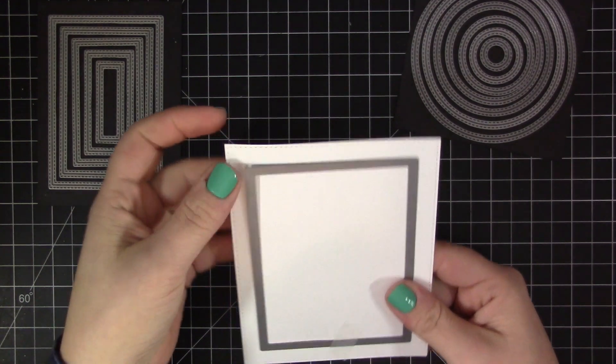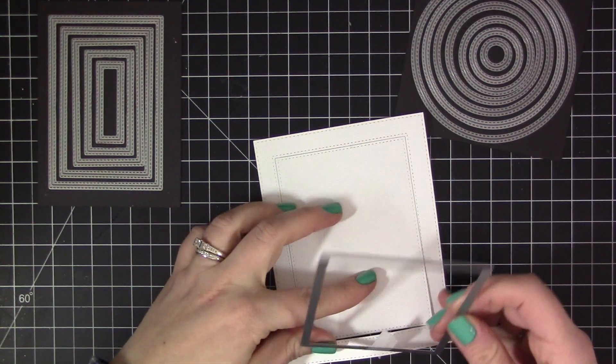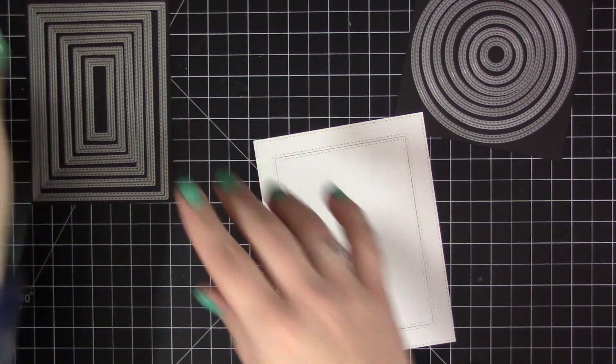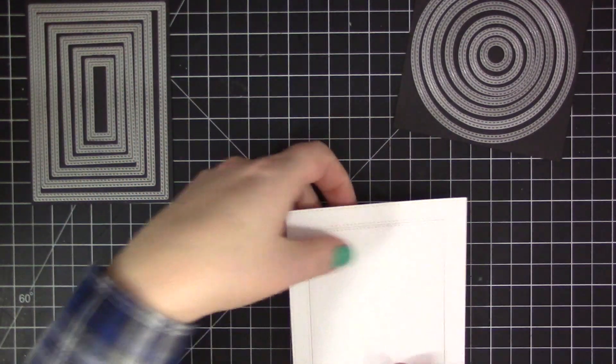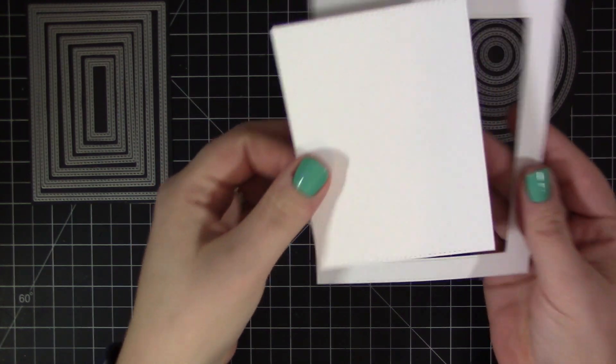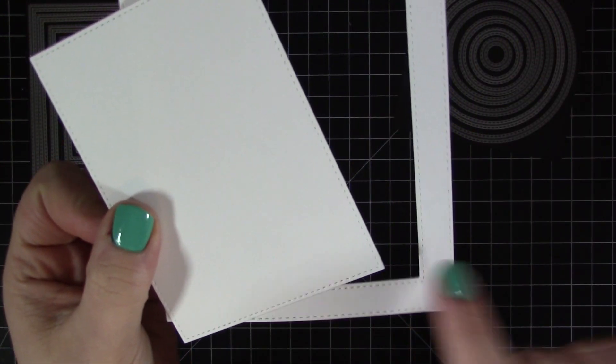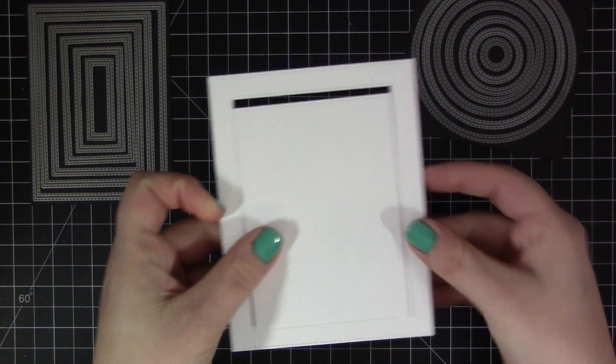I'm going to run that through my die cut machine. When I'm finished and I take the die off, you can see that I have stitch detail on both sides of the cut line. That's what really makes these dies unique. I love that you can either use the negative or the positive piece and still get that great stitching detail.